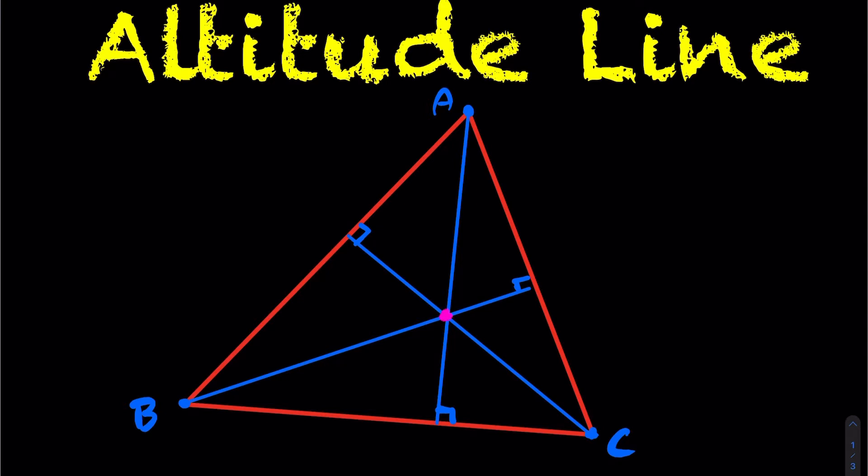Where these altitude lines cross, we have a special point called the orthocenter, and we'll talk about that in more detail in another video. But for now, we're focused on the idea of altitude lines. The altitude line is the height of your triangle.